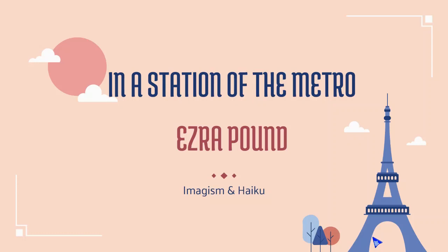In a Station of the Metro actually happened in a metro station. Ezra Pound was sitting there in Paris, looking at people, and some images came to his mind. He wrote a long poem, then edited and revised it over several months until he arrived at a very short poem that was both imagist and written in the form of a haiku.